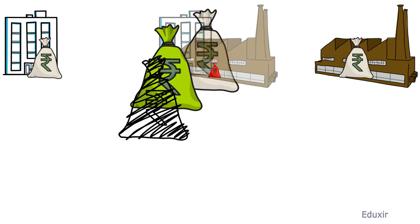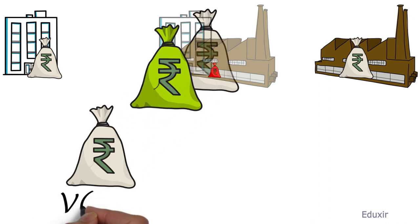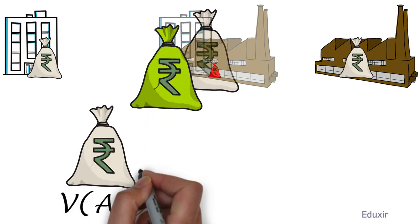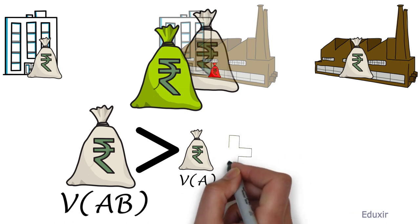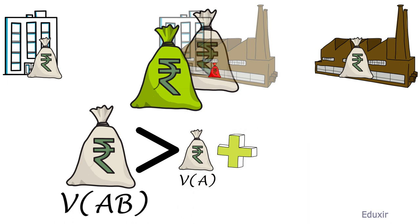In other words, value of the resulting firm AB would be always greater than the value of individual firms A and the value of individual firm B.